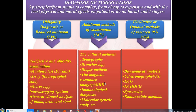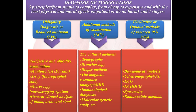If we do not make a diagnosis in the first stage, we proceed to additional methods of examination, which include: culture methods, tomography, bronchoscopy, biopsy methods, MRI, and immunological or molecular genetic study. After this stage of examination, we make a diagnosis in 78% of cases.